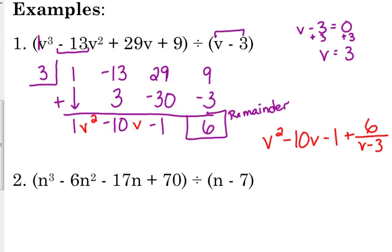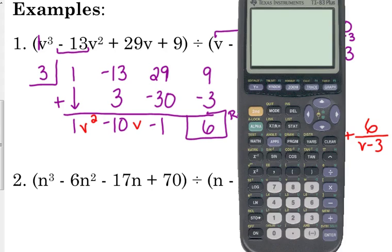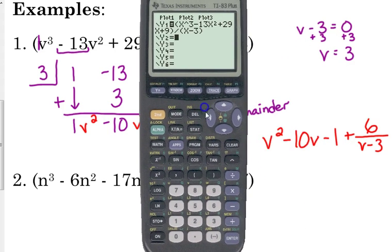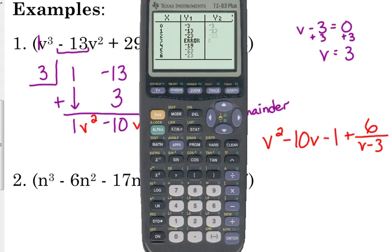You can check this by plugging into your calculator. In y1, you're going to put the original problem. Obviously use x's instead of v's, and put parentheses exactly where they have parentheses. So there's my polynomial divided by my binomial. And then in y2, I'm going to put my answer: x squared minus 10x minus 1 plus 6 over - you got to put x minus 3 in parentheses. Now if we did it correctly, then our y values should match up in our table. When we go to the table, and it did. So that means that what we have in y1 is equivalent to what we have in y2, and that's what we want. We're just expressing this division problem in a different way. So we want them to be the same thing, it's just rewritten. That's how you can check this.